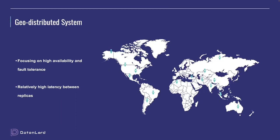What is a geo-distributed system? As we can see in the graph, compared to a single data center distributed system, a geo-distributed system has its nodes in multiple data centers. This makes the system have high availability and fault tolerance — even if a data center was cut off, the system can still function normally.